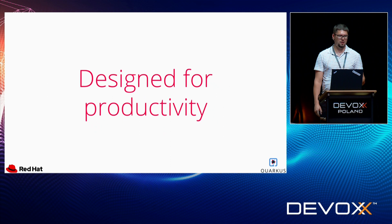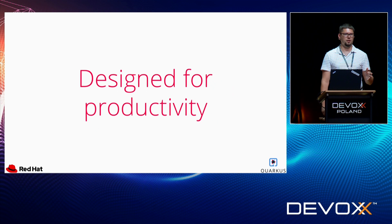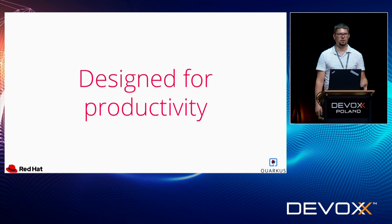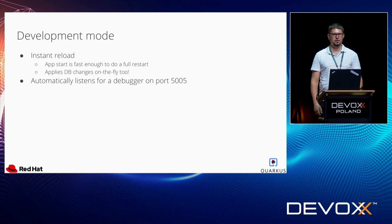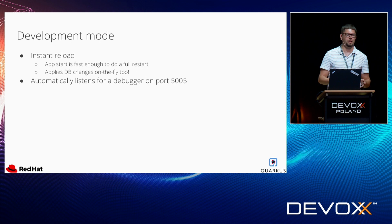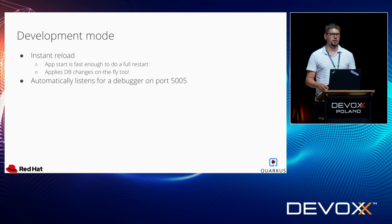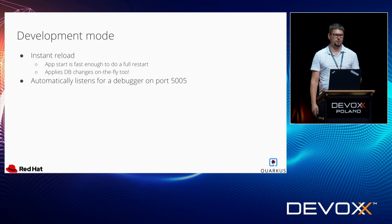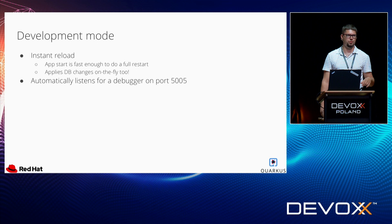Quarkus is not only about using nice APIs and providing good numbers — it's also a huge improvement in productivity. The biggest thing in this area is the development mode. With it, you get instant reload: you run your application with a special Maven or Gradle plugin, and then when you modify your code or configuration, your application will be reloaded on the fly. The scope of the applied changes is really wide — it even contains DB schema changes. Also, in the development mode, the application automatically listens on port 5005 for a debugger.